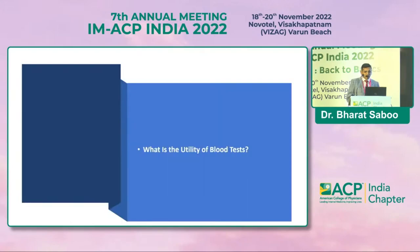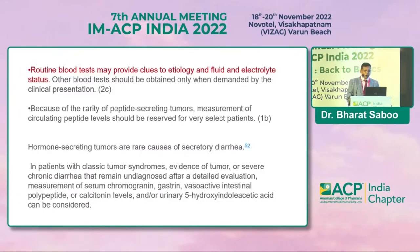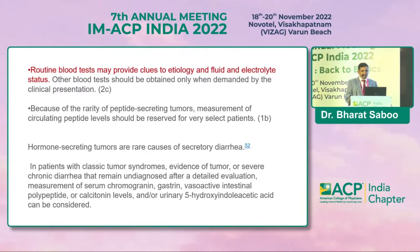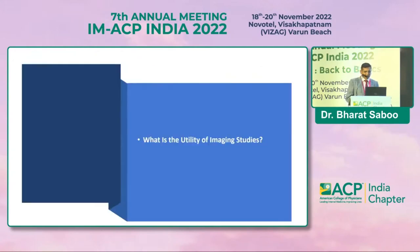Blood tests provide clues to etiology, assess fluid and electrolyte status, and should be obtained selectively based on clinical presentation. Hormone-secreting tumors are very rare causes of secretory diarrhea. Measurement of circulating peptide levels should be reserved for selected patients — specifically those with classic tumor syndrome, evidence of tumor, or severe chronic diarrhea undiagnosed after detailed evaluation. Measurements such as serum chromogranin, gastrin, VIP, calcitonin, and urinary 5-HIAA may then be considered.